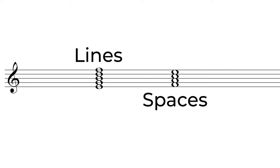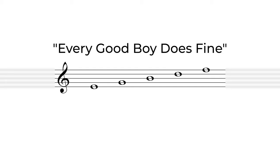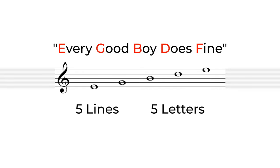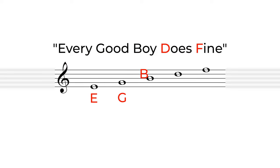Let's start with the lines. We have a simple phrase to help us know where our notes go: Every Good Boy Does Fine. There are other phrases that music educators use, but this one is very commonly used. We take the first letter of each word — E, G, B, D, F — five lines, five letters. Now let's plug in our notes from the bottom line moving up to the top line. We see that our notes are in the same order from the bottom to the top.